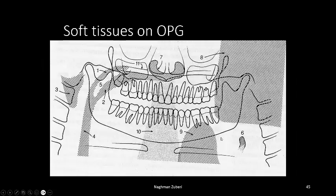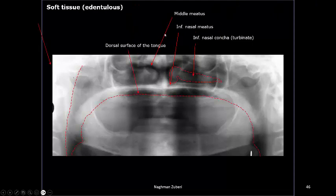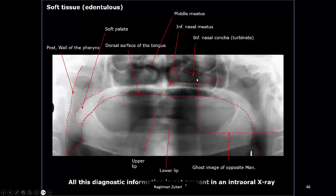Soft tissues are also visible on an OPG. Using an edentulous arch as reference, one can identify the inferior nasal concha, inferior nasal meatus, middle meatus, and the dorsum of the tongue. The soft palate and the posterior wall of the pharynx are also visible, as are the upper lip and lower lip.